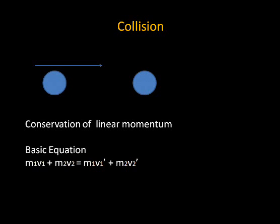Any problem of any level will require an equation related to conservation of linear momentum. That equation says: if mass m1 is moving with velocity v1 and mass m2 is moving with velocity v2 before collision, on the left side we write the sum of momentum before collision and on the right side the sum of momentum after collision. So m1·v1 plus m2·v2 equals the total momentum of the system after collision.